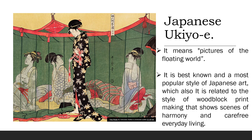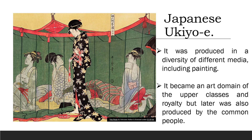Japanese Ukiyo-e means 'pictures of the floating world.' It is the best known and most popular style of Japanese art, related to the style of woodblock printing, making scenes of harmony and carefree everyday living. It was produced in a diversity of media including painting, and became an art domain of the upper classes and royalty, but was later reproduced by the common people. That is the end of lessons 1 and 2. See you for lessons 3 and 4.